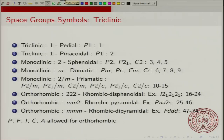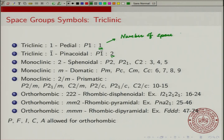Let us now look at the space group symbols. In the case of the pedial system, there is only one space group and that is just denoted as 1. The pinacoidal is just a one with an inversion. The last digit is actually the number of the space group. So a crystal whose space group is numbered 1 corresponds to the triclinic pedial. The Hermann-Mauguin symbols are P1 and P1̄.